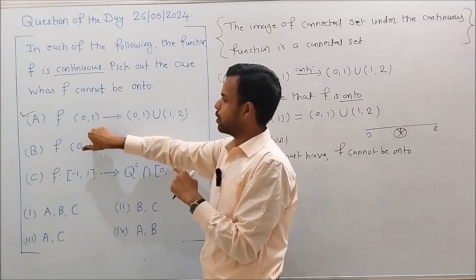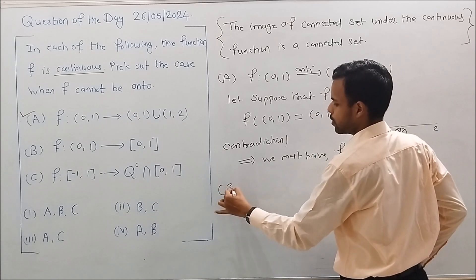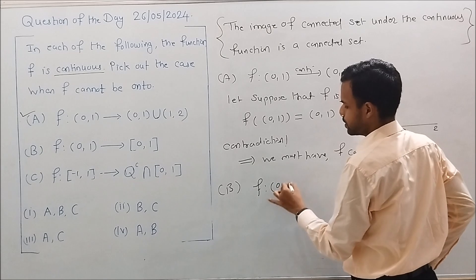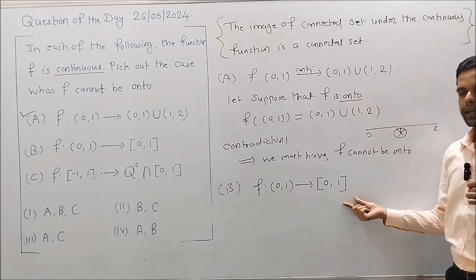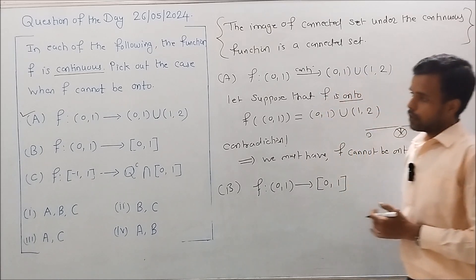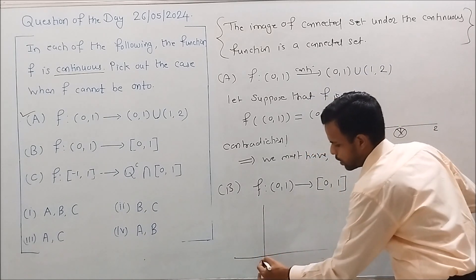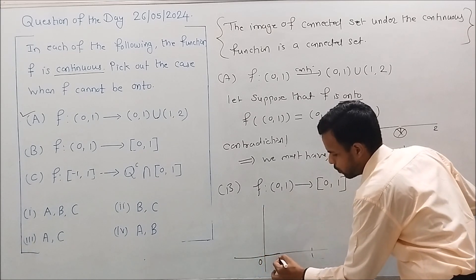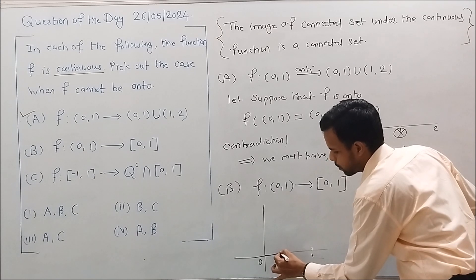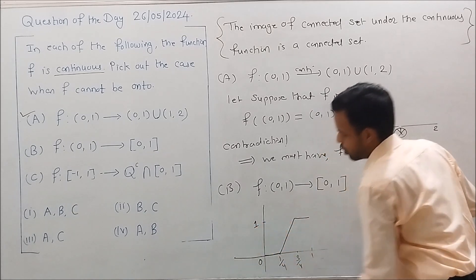Now let's consider Case B. Here f is a mapping from the open interval (0,1) to the closed interval [0,1]. It is given that f is continuous. Let's define a map: from 0 to 1/4 it takes value 0, from 1/4 to 3/4 it rises linearly, and from 3/4 to 1 it takes value 1.